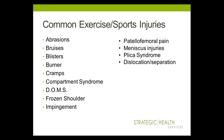Let's quickly go over some common exercise and sport injuries. Abrasions are basically scrapes or cuts, bruises, blisters, etc. A burner, also called a stinger, is a nerve injury resulting from trauma to the neck and shoulder, typical in contact sports like football. Compartment syndrome is a serious condition that can occur from blunt force trauma or as an overuse injury. Different compartments in your arms and legs contain groups of muscles, blood vessels, and nerves, and if there's swelling inside a compartment, it causes increased pressure and can damage connective tissue.